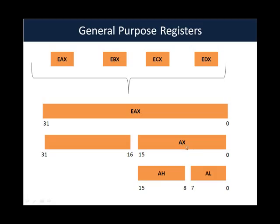It is further possible to access the lower 8 bits and the upper 8 bits of that 16-bit portion of EAX by referencing them as AL (A low) and AH (A high). Similarly for EBX, you can access the first 16 bits as BX, with BH being the high byte and BL the low byte. You just need to remember that among the general purpose registers, these four registers allow selective access to their lower-order bits using different names: AX/AH/AL, BX/BH/BL, CX/CH/CL, and DX/DH/DL.